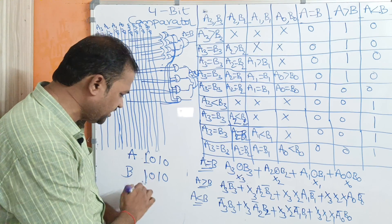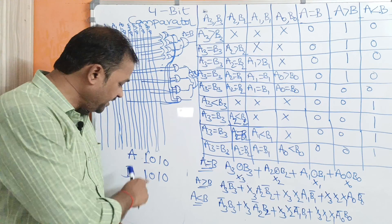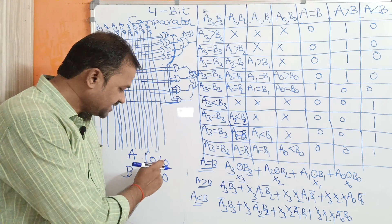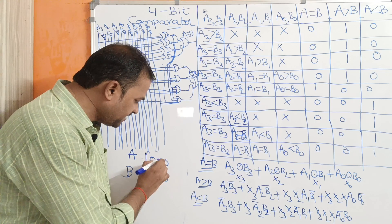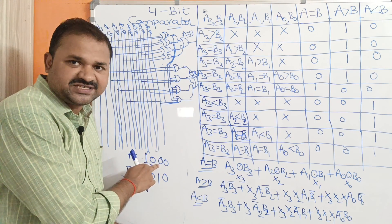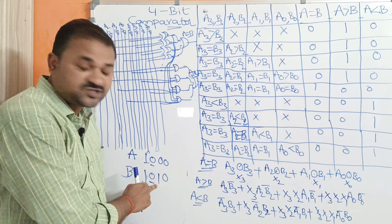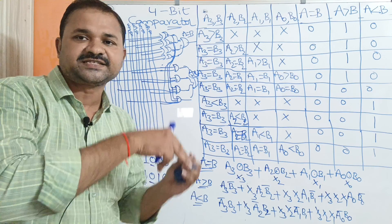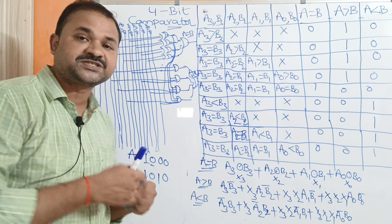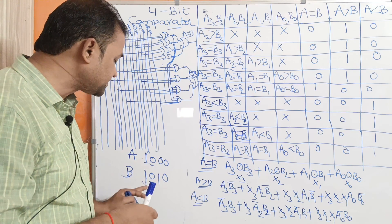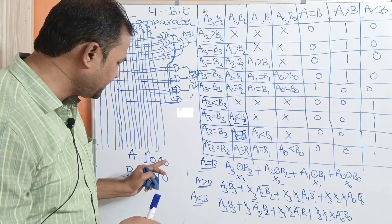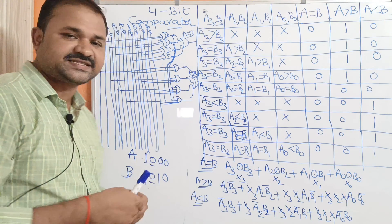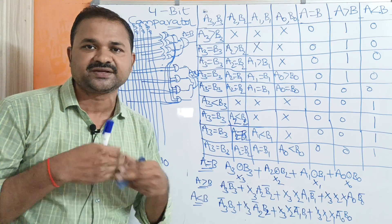Now let us assume the first number is 1010 and we compare A3 with B3 — both are equal. So next we compare A2 with B2 — both are equal. Next we compare A1 with B1. Let A1 be 0 and B1 be 1. Since 0 is less than 1, we can say A is less than B, so the A less than B output is 1 and the remaining two outputs are 0. Here 1000 is decimal 8 and 1010 is decimal 10, so 8 is less than 10. Likewise, the comparison is performed bit by bit.